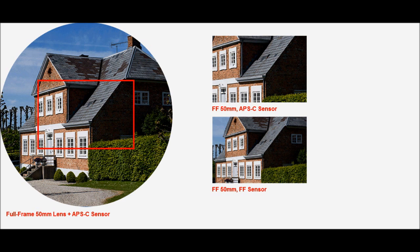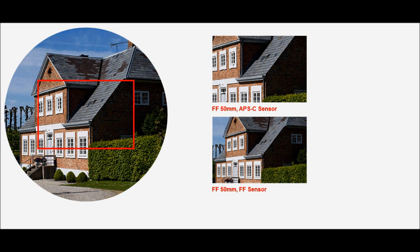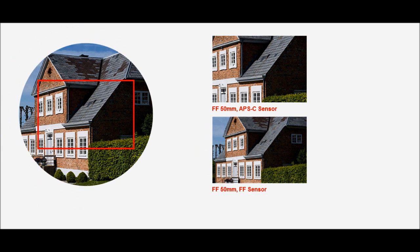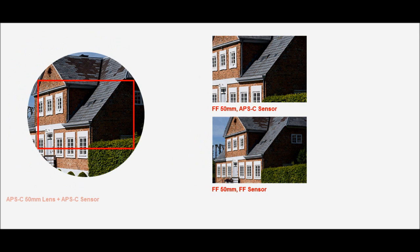We're not done yet, though. Camera manufacturers did one more thing to further reduce prices. Since the APS-C sensor is much smaller than full frame, it doesn't have to be used with lenses that cover such a large image circle. So manufacturers started producing crop format lenses with a smaller image circle, like this.